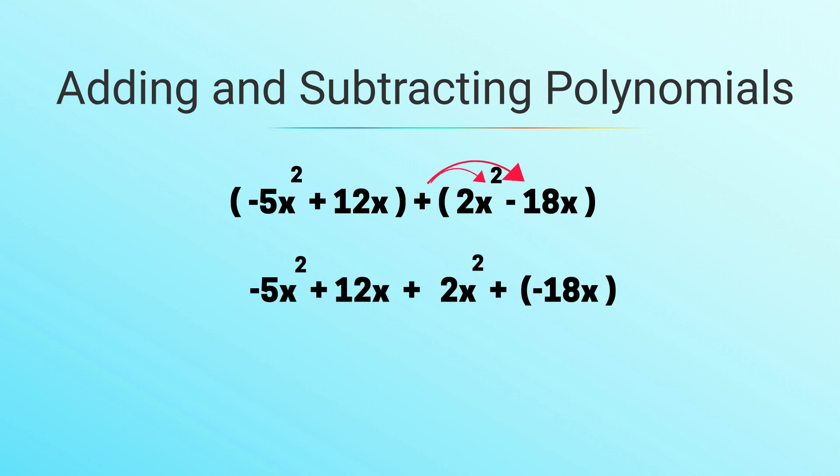So we have negative 5x² plus 12x. When you distribute the positive sign with the 2x², it becomes plus 2x². And then when you distribute the positive and the negative, you get negative 18x.